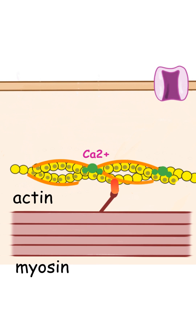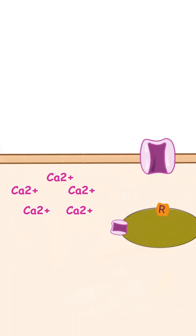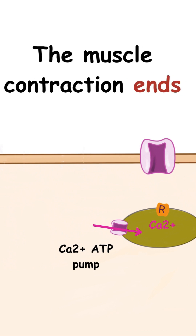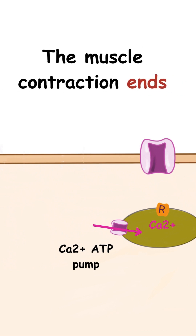Shortly after that, calcium channels close, and the influx of calcium ions stops. Calcium ions within the cell are actively pumped via the calcium ATP pump back into the sarcoplasmic reticulum. With that, the muscle contraction ends.